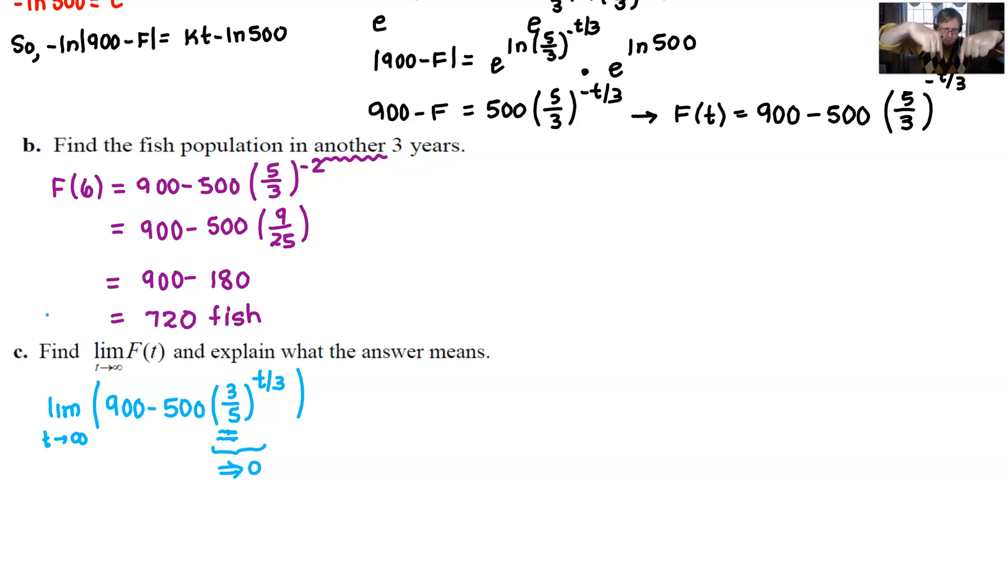If that bothers you, you could go back where that negative t is. If I drop down this entire expression five thirds to the bottom with a positive t over three power, then this bottom is going to get really big, like infinity big, and one over infinity is also going to be zero. So you can look at it a variety of ways. But no matter what approach you take, I didn't have to touch a calculator. And so all that's left here is 900 minus zero. And of course, that is going to be 900.